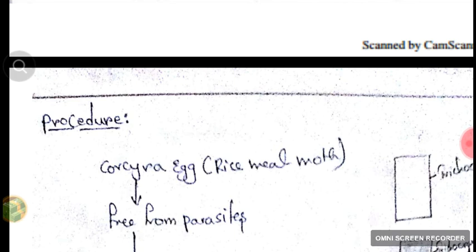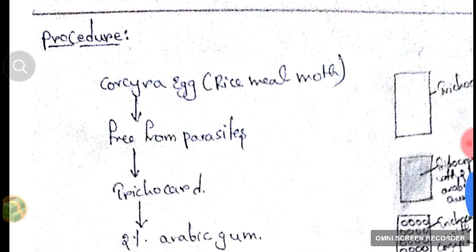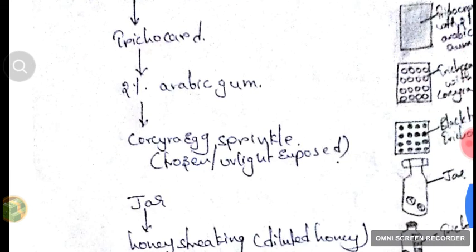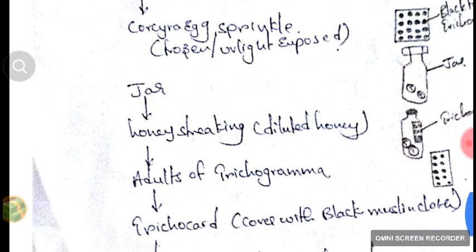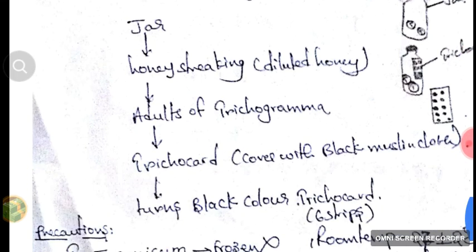We take Corcyra eggs — rice meal moth eggs — which should be free from parasites. Place a trichocard and apply 2% arabic gum to it, then sprinkle and stick the eggs of Corcyra to it using a camel hair brush. The trichocard is initially white and turns black after parasitism. The eggs should be in a frozen state or exposed to UV light. Take a jar, streak it with diluted honey, place adults of Trichogramma, insert the trichocard, and cover with black muslin cloth. Cut the card into 6 strips of 7.5 × 2.5 cm for field deployment or further multiplication.